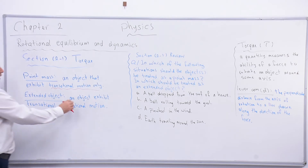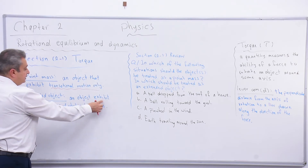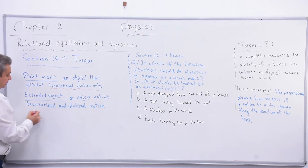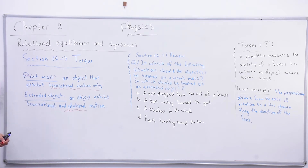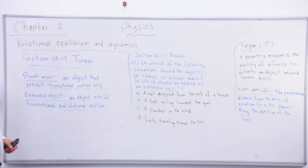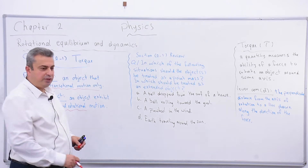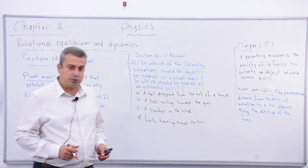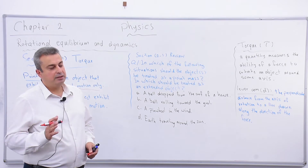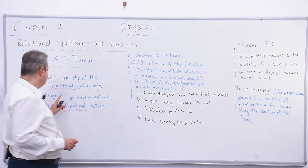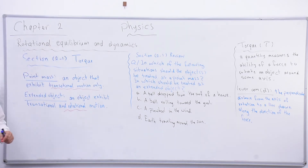The extended object is an object that exhibits both translational and rotational motion. For me, rotational motion is the key. I will think about the object: is it moving? While it is moving, if we have rotational motion, that's it - it is an extended object. The key for the second type is rotational motion.